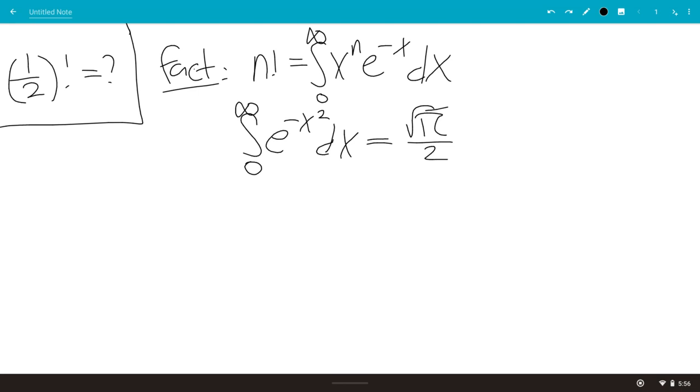So we're going to plug in the one-half to equation 1. So we get one-half factorial is the integral zero to infinity of x to the one-half e to the minus x dx.